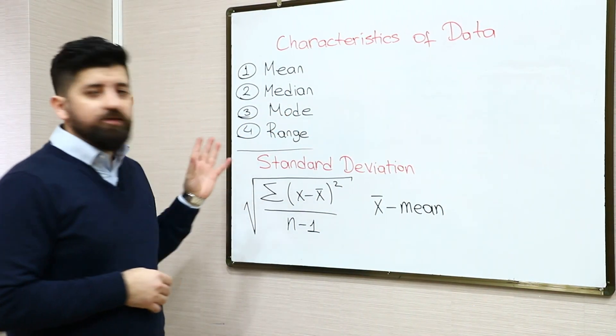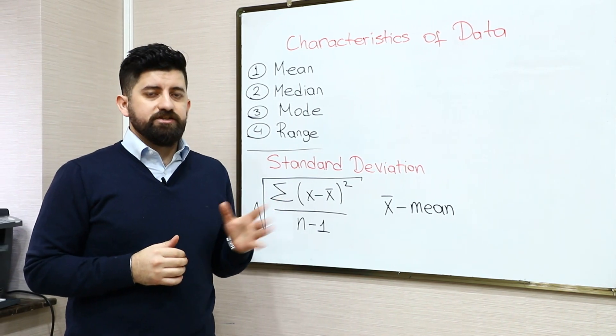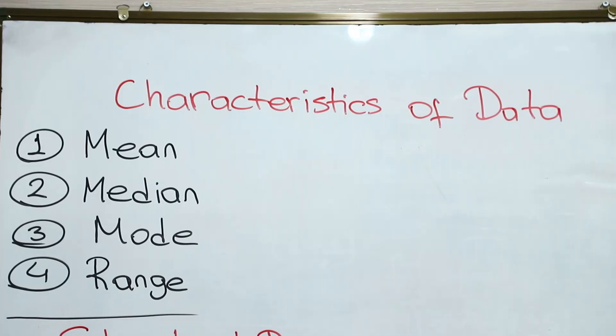Hi everyone, in this video I'll talk about the characteristics of data. There are four basic characteristics or terms in data: mean, median, mode, and range.